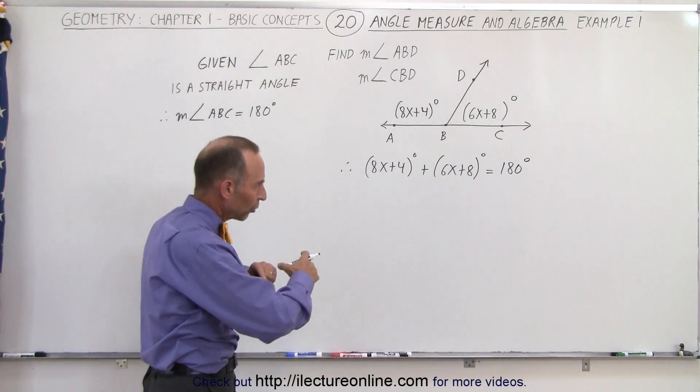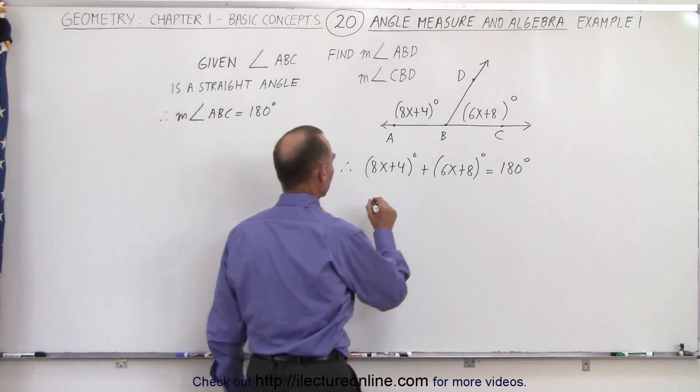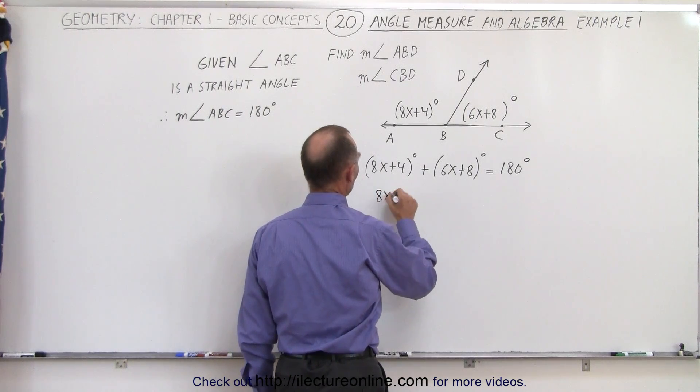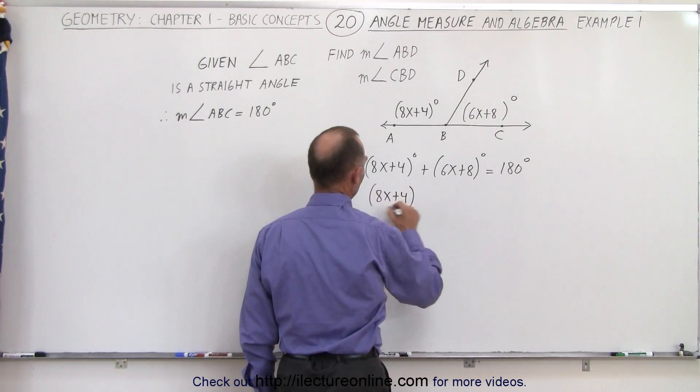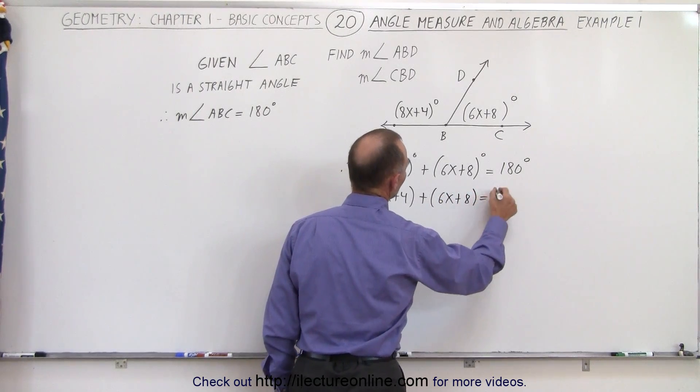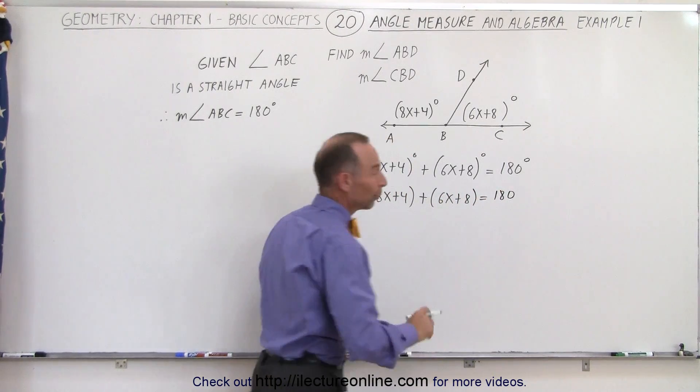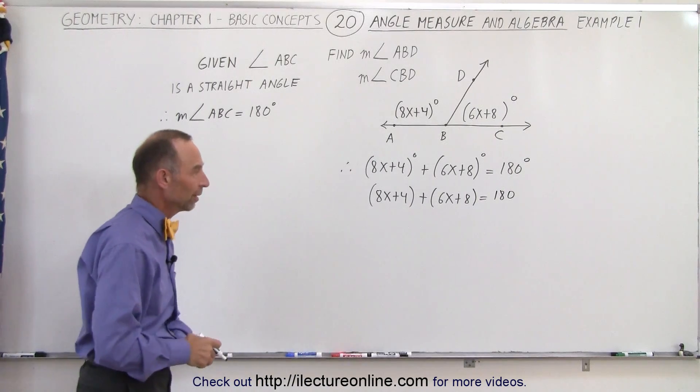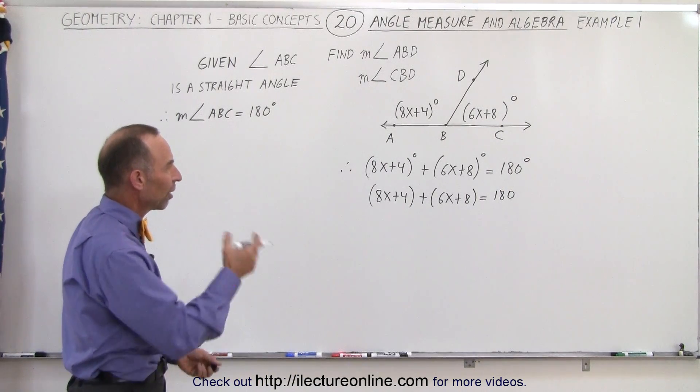To make things easier we'll drop the degree notation so we can say that 8x plus 4 added to 6x plus 8 must equal 180, realizing that we're dealing with degrees here. Now what we need to do is solve for x.